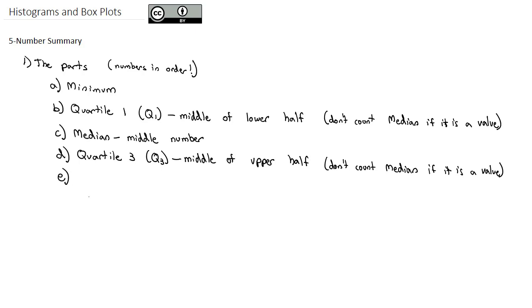And then the last value of the five-number summary, the fifth value, is the maximum. So, for example, if I were to ask a bunch of people how many pets they have, what is the number of pets they own?